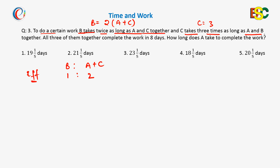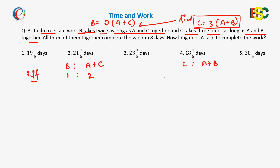Further, the question says C takes three times as long as A and B together. So the time equation gives us C equals thrice of A plus B. Since both equations are in terms of time, the efficiency ratio of C to A plus B becomes 1 is to 3, again because efficiency is reciprocal of time.